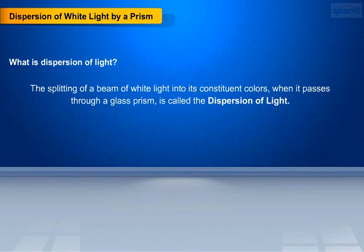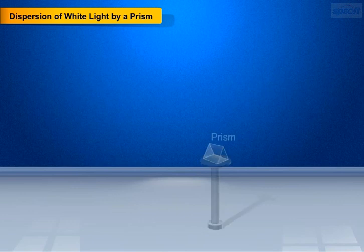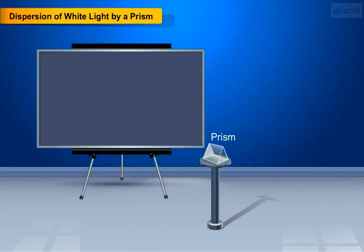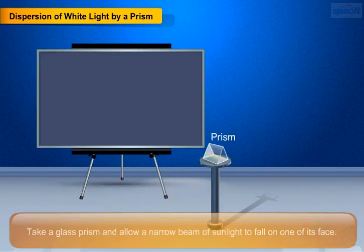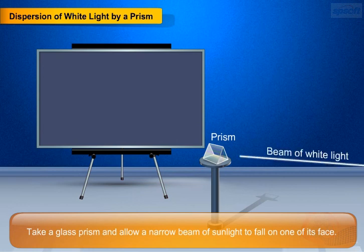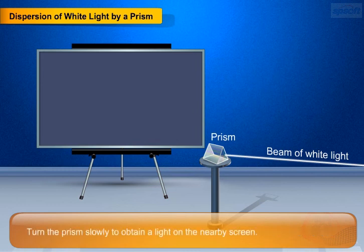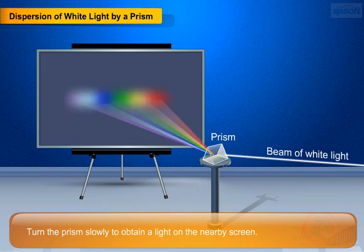Let's do an experiment to understand the dispersion of white light by a prism. Apparatus required: a glass prism and screen. Take a glass prism and allow a narrow beam of sunlight to fall on one of its faces. Turn the prism slowly to obtain a light on the nearby screen. The prism splits the incident white light into a band of colors.